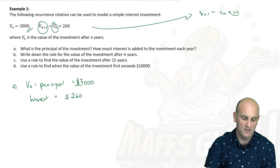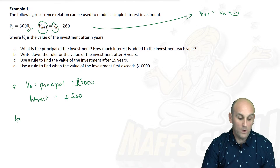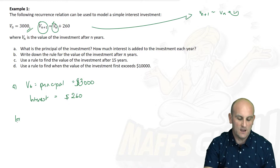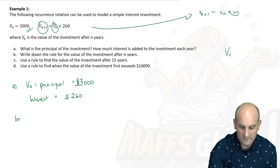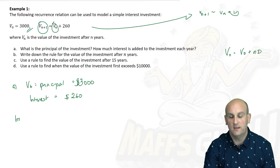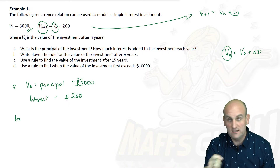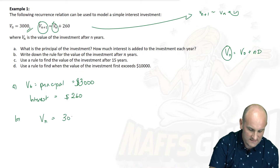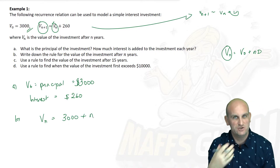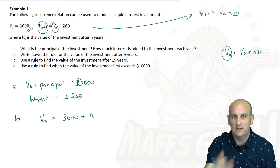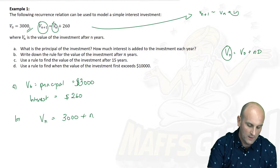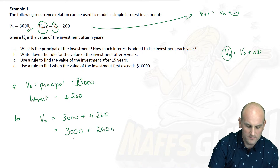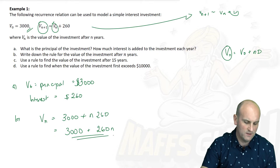Now, write down the rule for the value of the investment after N years. When it says 'after N years,' it wants you to put it into the format V(N) = V0 + N × D. So V(N) = $3,000 + N × D. We don't know what N is — it's a general formula. D is how much my account goes up every single year, which we found to be $260. Generally we always write numbers before letters, so: V(N) = $3,000 + $260N.